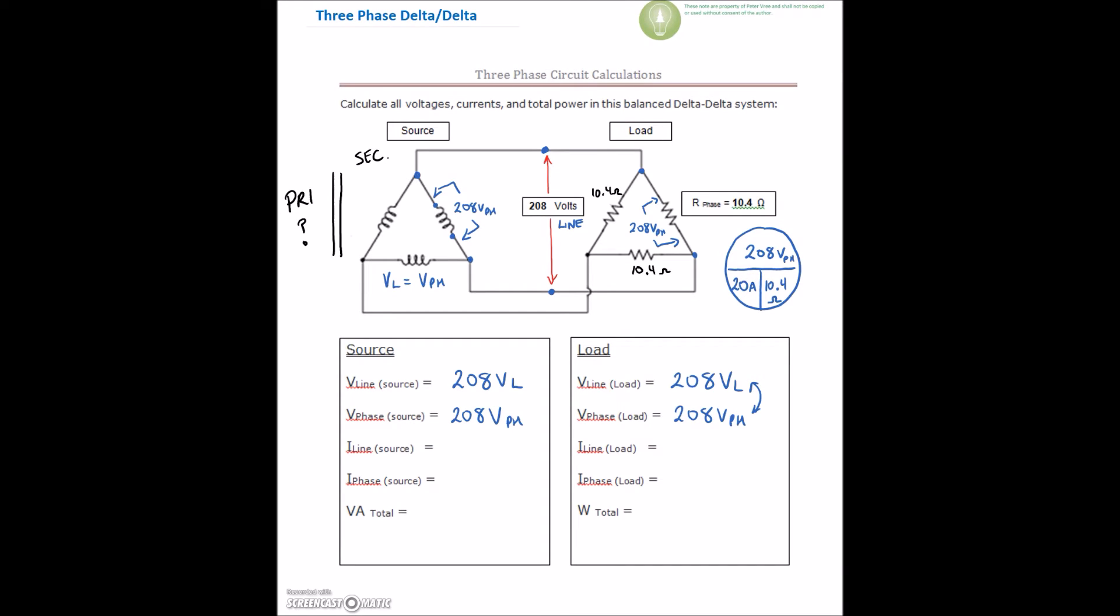And that value that we just found is on the phase. So we have 20 amps on the phase. Our phase current is equal to 20 amps. Because we're putting 208 across 10.4, providing us with 20 amps. Well, we're looking on the inside of the delta. So our phase current here, 208 divided by 10.4 ohms gives us 20 amps on the phase.